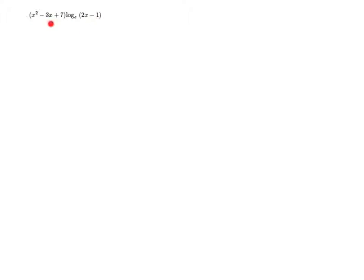For what we're trying to differentiate here, we've got x² - 3x + 7 times log base e of 2x - 1. So we've effectively got one function here and another function here. We've got the product of two functions.